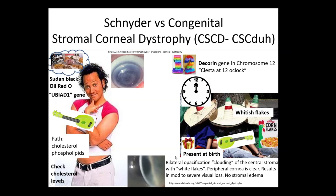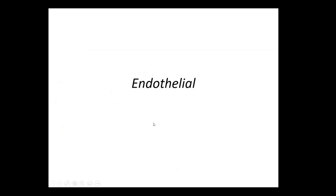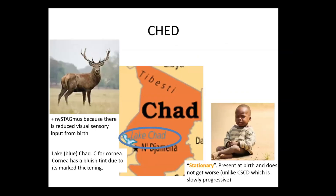To differentiate Schneider from CSCD: you can use Oil Red O for lipid staining to identify Schneider's, but another key difference is progression — CSCD is very slowly progressing or not progressing at all, like a siesta. Schneider's can get worse. They're both autosomal dominant.